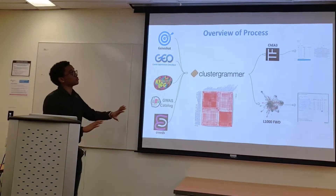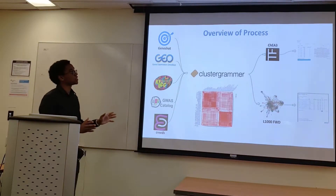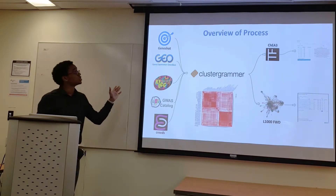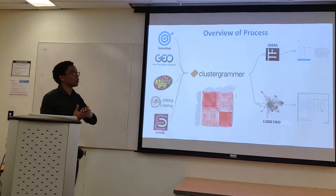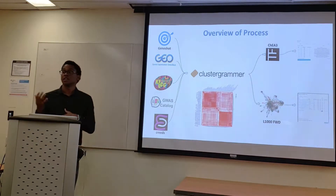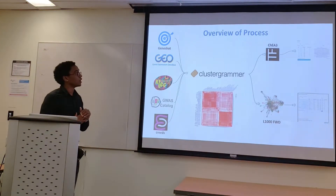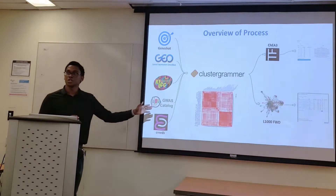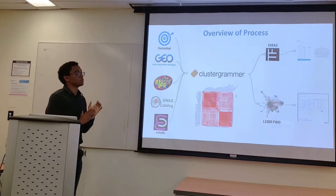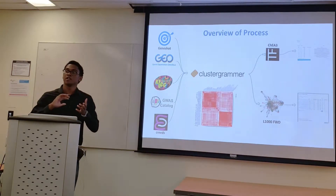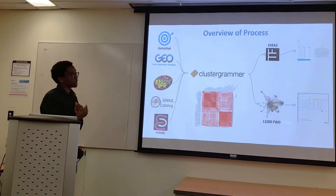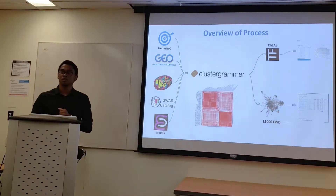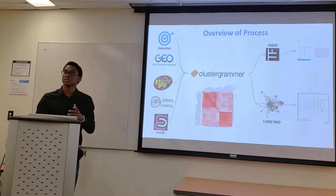Here's a brief overview of the process. To the far left, we see GeneShot, Geo, Keg, GWox, Catalog, and Creeds, which are all the sources of data that I collected from. In the middle, we see ClusterGrammar, which, using Damien's code, I was able to visualize clusters and do a first set of analyses. And then to the far right, we see CHIA and L1000FWD, which serve as the final round of analysis before results were given.